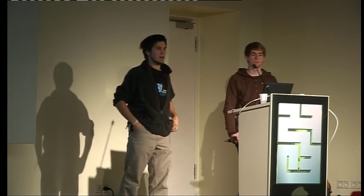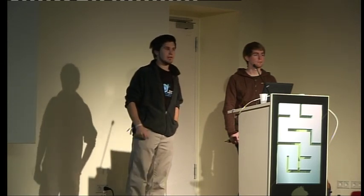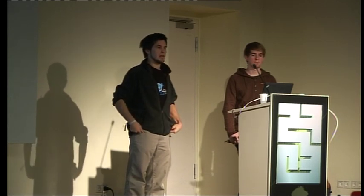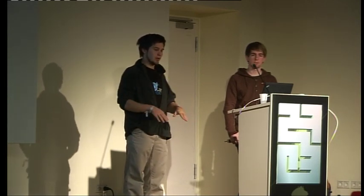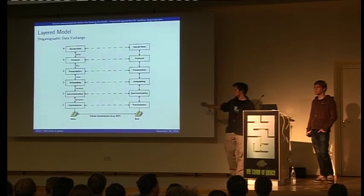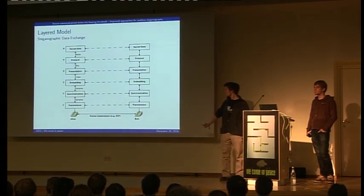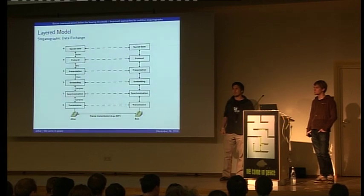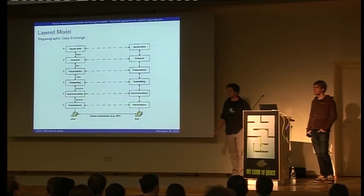The embedding process takes chips and puts them into samples received from either the routing process or the sound card. We then need synchronization to ensure both sides start decoding at the right time. After that, all samples are placed on the bus — handed over to the routing process or back to the sound card. On reception, the stego object goes through all layers in reverse order.